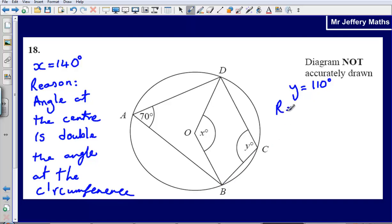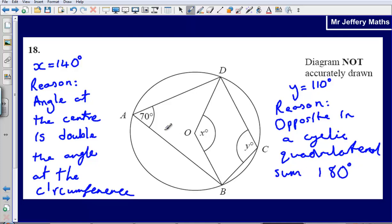Now the reason is that the opposite angles... so we'll write our reason out: the reason is the opposite angles in a cyclic quadrilateral. So the opposite angles in a cyclic quadrilateral sum, so they add up to 180 degrees. So 70 plus 110 would be 180 degrees.